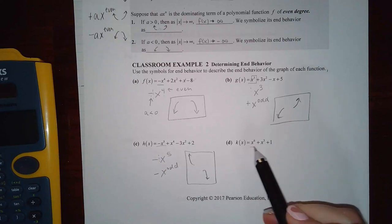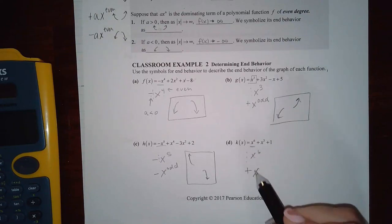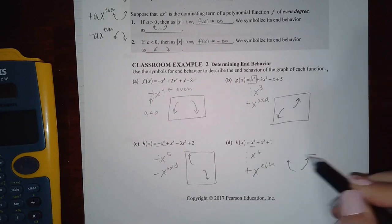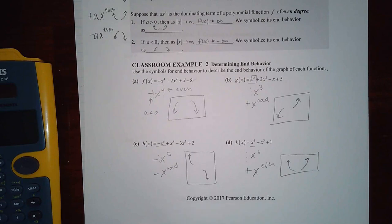And then finally, the last one, this is the one with the highest exponent. And that is a positive x to the even, which means it should be going upward on both ends. And don't fill in the middle because we don't know what's happening there in the middle. At least not yet.